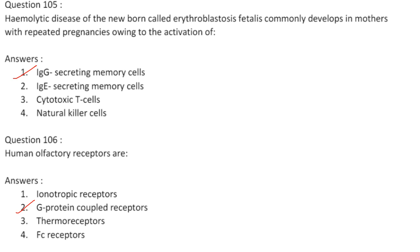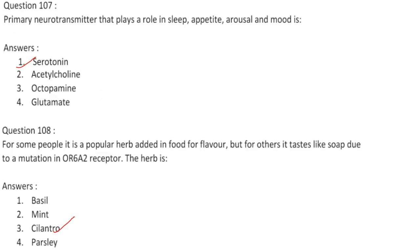Human olfactory receptors are G protein-coupled receptors. The primary neurotransmitter that plays a role in sleep, appetite, arousal, and mood is serotonin. Answer is option 1. For some people, a popular herb added to food for flavor tastes like soap due to a mutation in the OR6A2 receptor. The herb is cilantro. Answer is option 3.